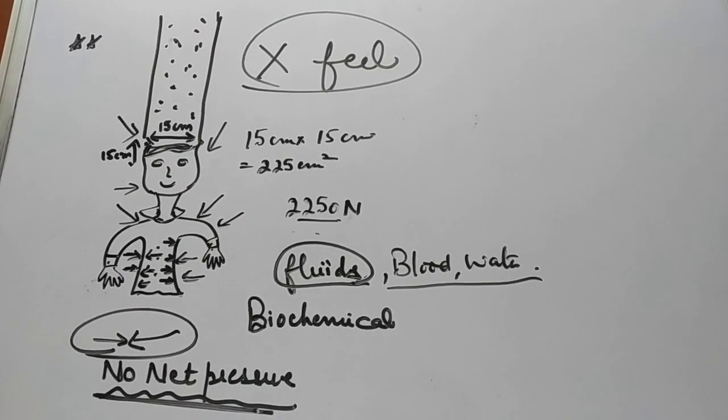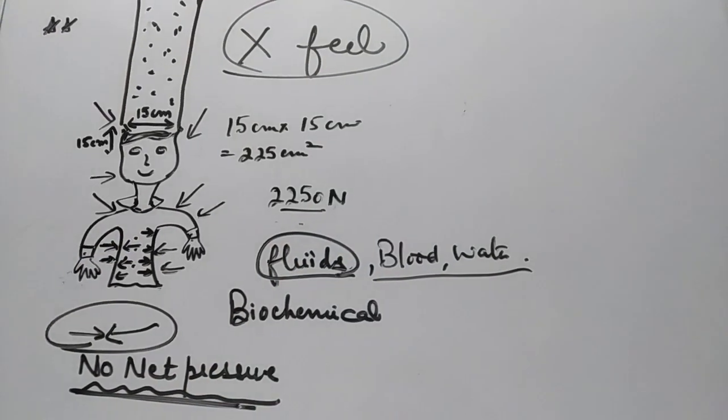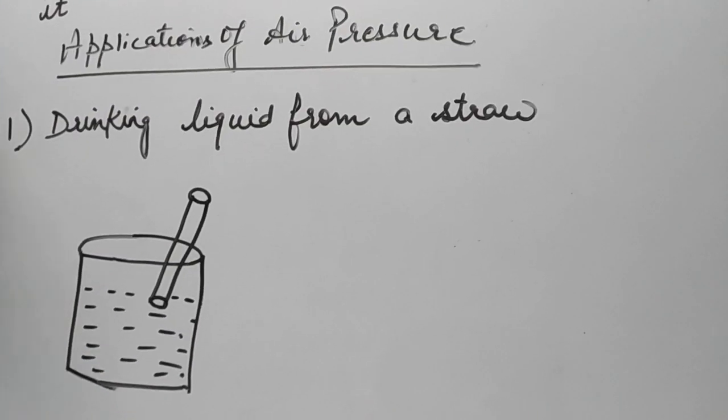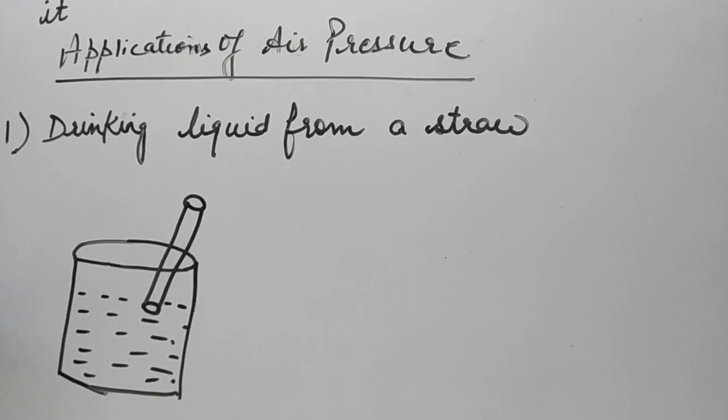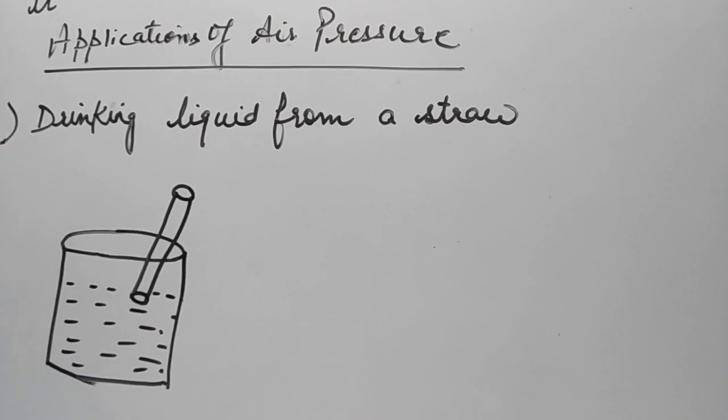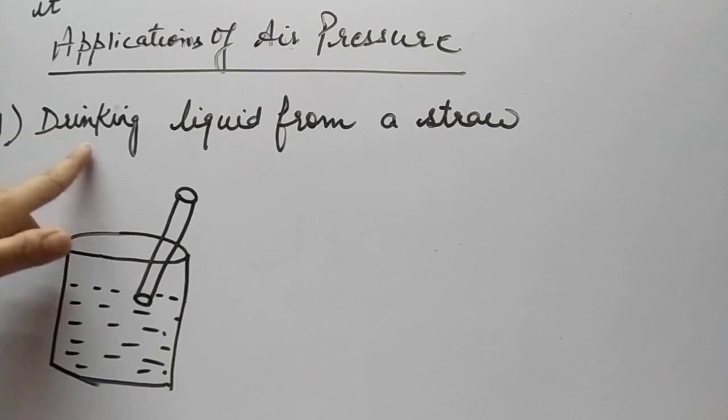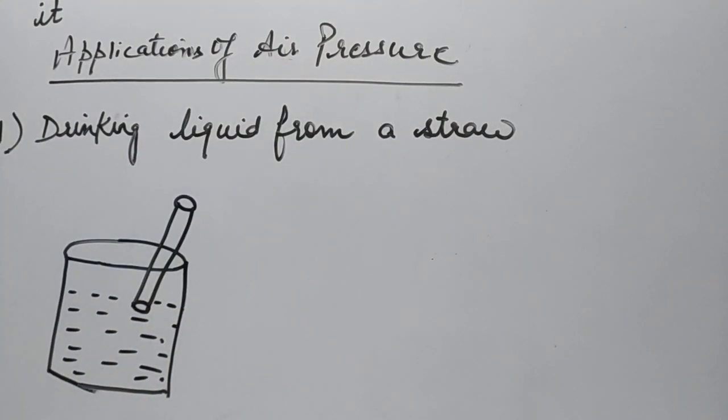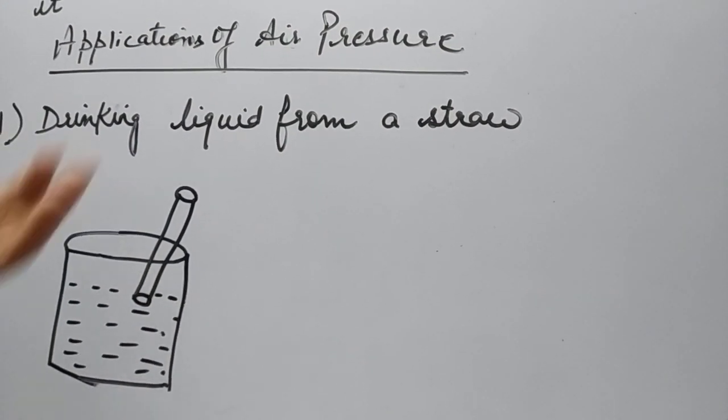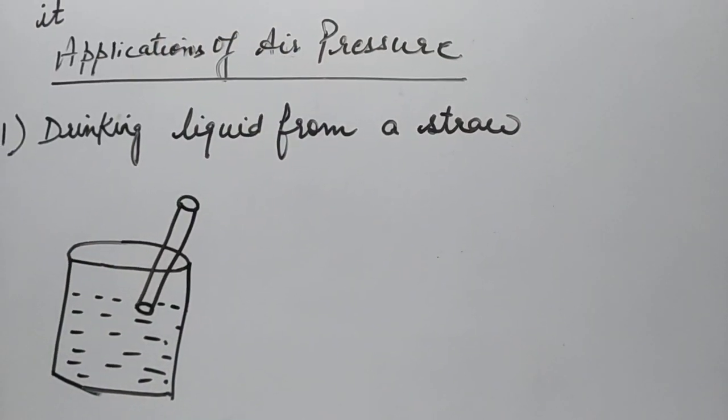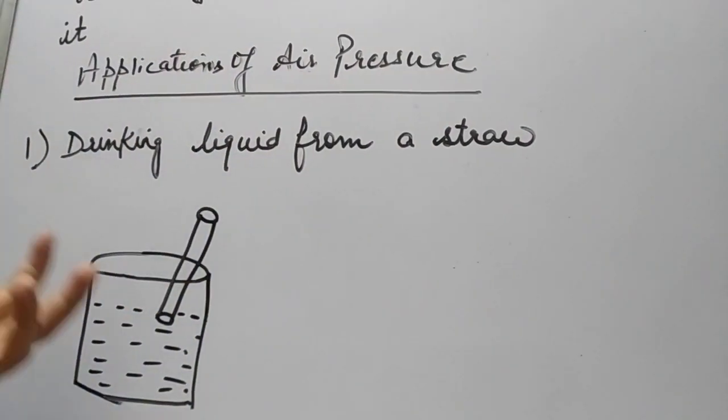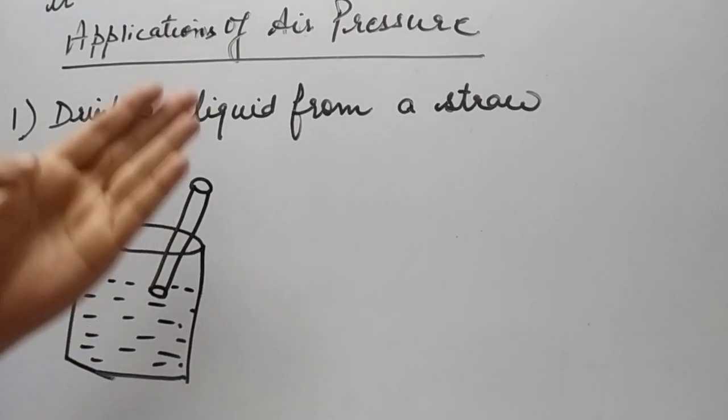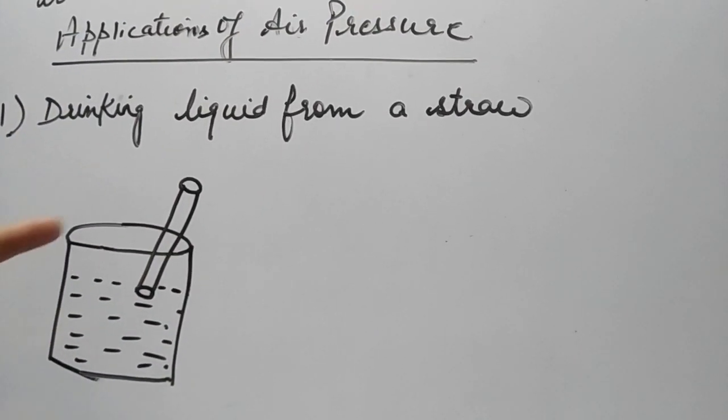That is all about atmospheric pressure. There are various examples. Let's talk about various applications of air pressure in our day-to-day life. Now the first example, a very common one, is whenever we are drinking liquid from a straw. We have never realized but there is a major role of air pressure around us. If air is not exerting some pressure, we can never be able to drink water or any liquid from a straw.